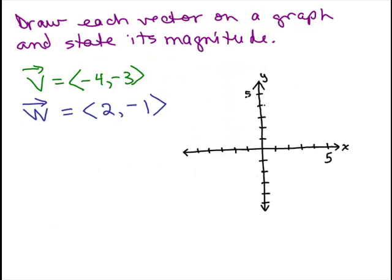All right, so here's the first one. It says draw each vector on a graph and state its magnitude. The first thing to remember is there's a lot of places you could place each vector, not just one place, but I thought it might be easier if we have a graph so it's easier to see exactly where you might start and end one.